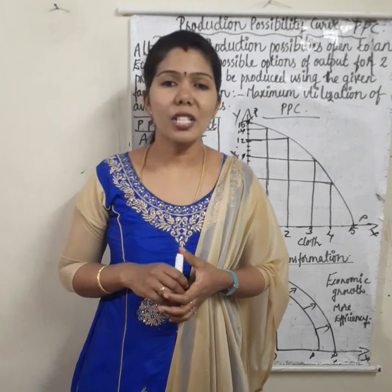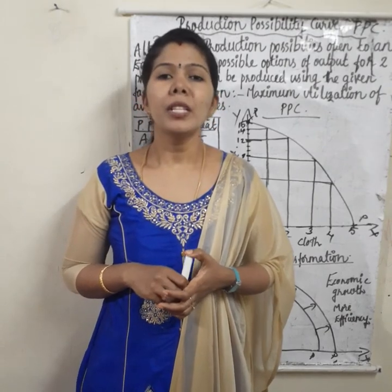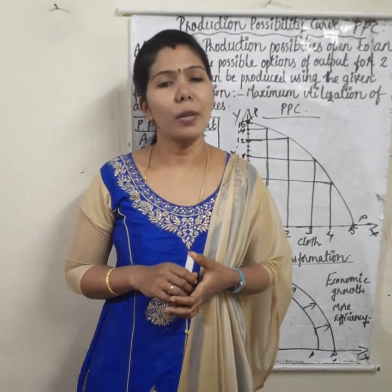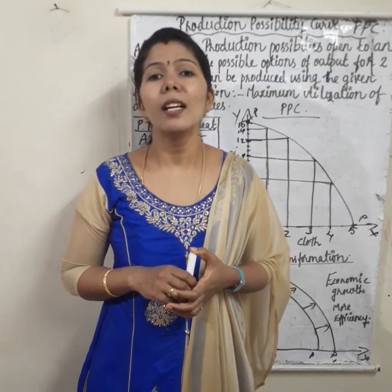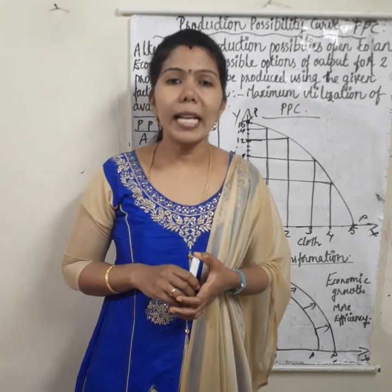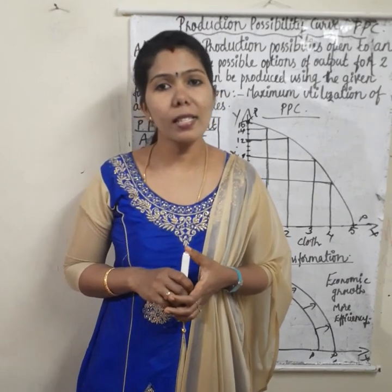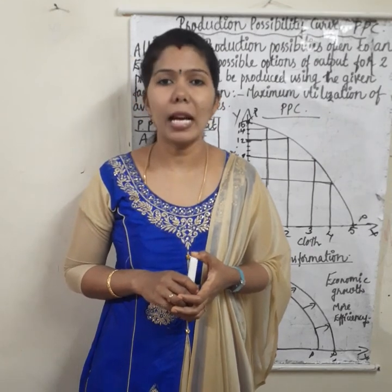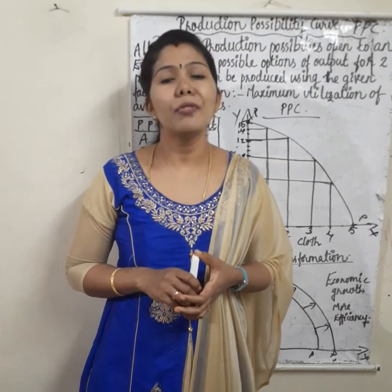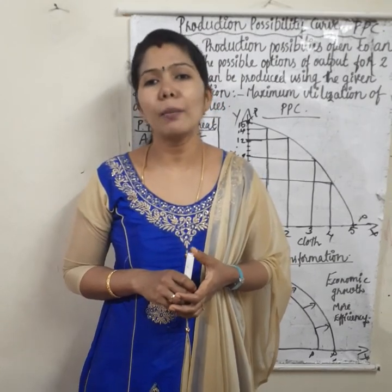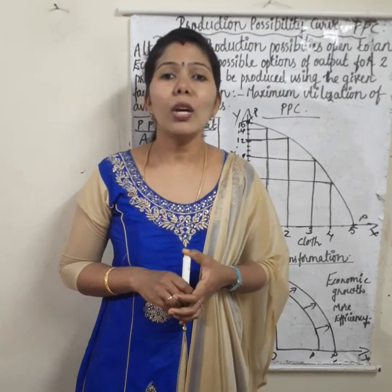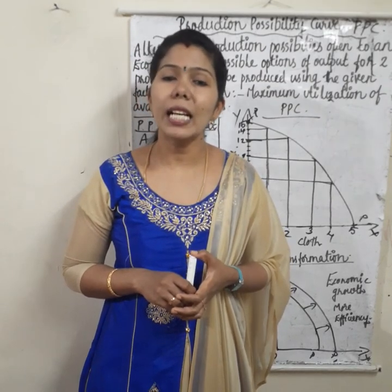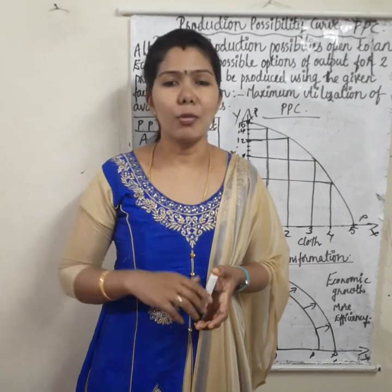Production possibility curve, or production possibility frontier, or boundary — it shows alternative production possibilities of two commodities open to an economy. We already know that our resources are limited, so we have to utilize our resources in an efficient manner. Otherwise we will not produce more units of commodities and we will not attain economic growth. So, in order to produce more units of one commodity, we have to sacrifice or curtail the production of some units of another commodity.